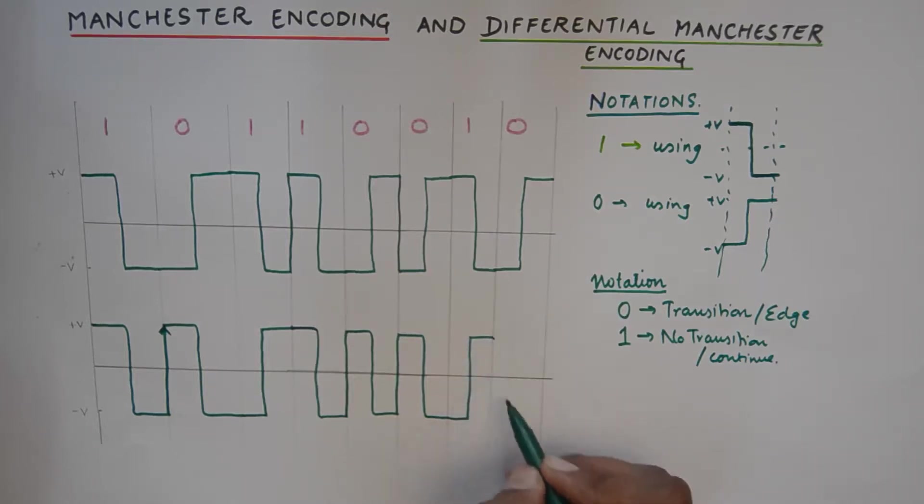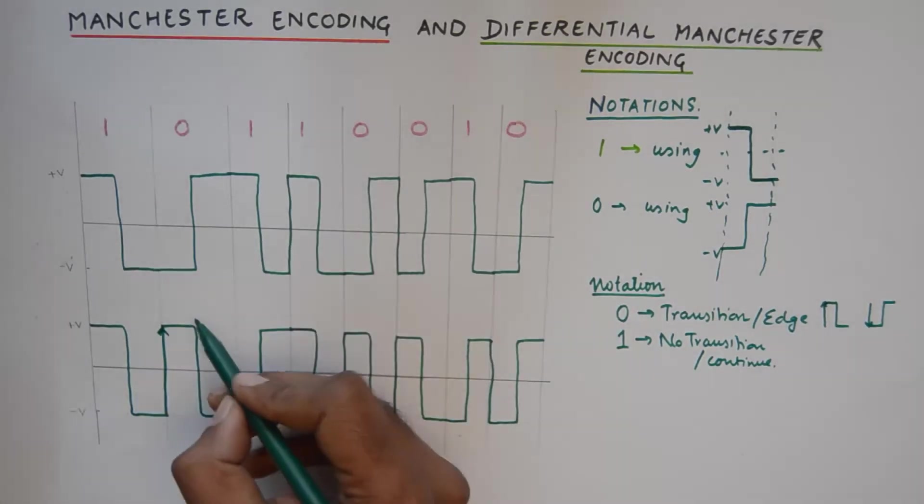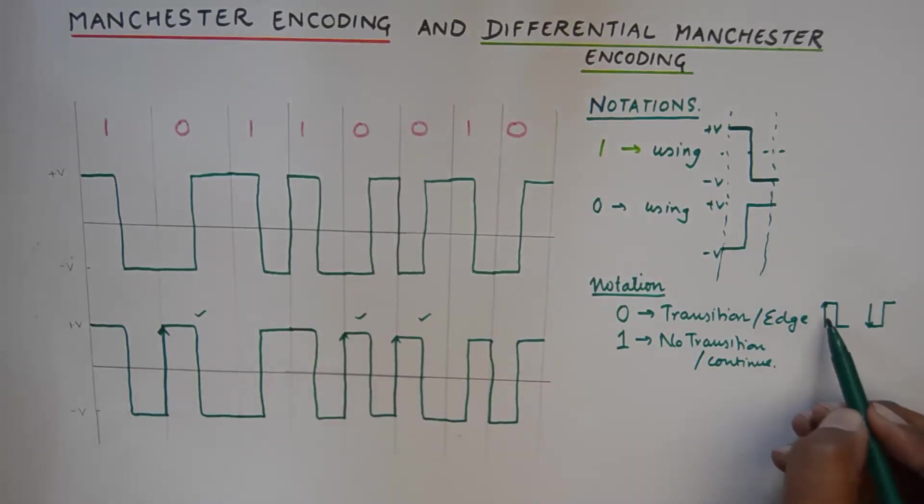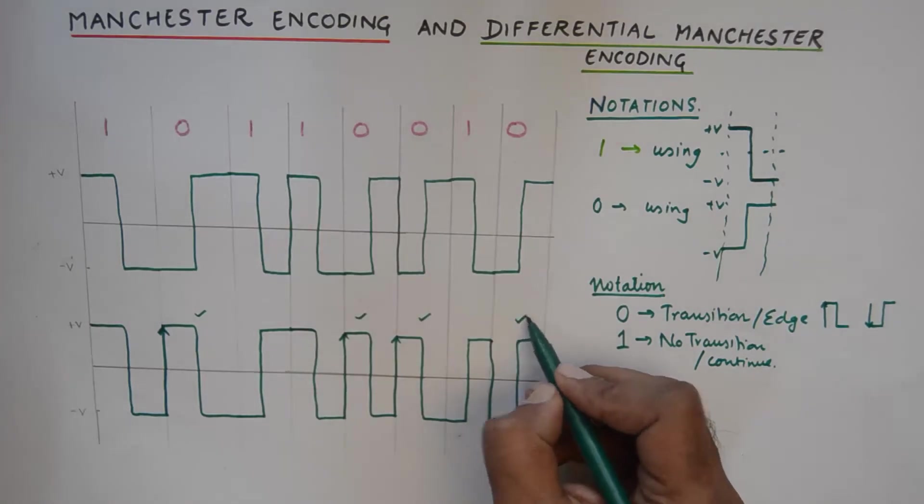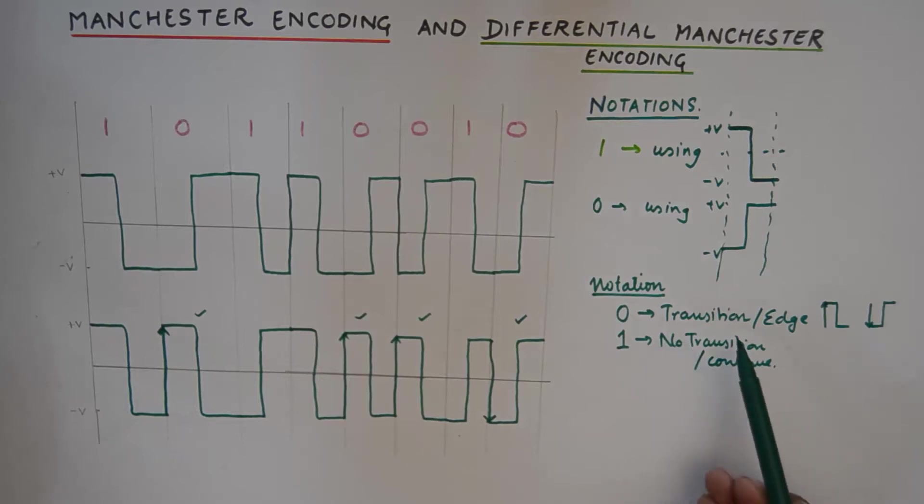So from this thing you could say that a zero could be represented like this or can be represented like this. Just look at this case, this case and this case here. The transition went from minus V to V so it looked like this. So basically what you need to remember is that there is a transition or an edge at zero and there is no transition and the signal will continue its journey when a one is encountered.